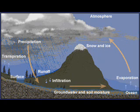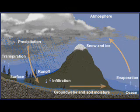Most people are familiar with the concept of cycles — that certain substances move endlessly throughout the Earth's biosphere, hydrosphere, atmosphere, and lithosphere, existing in different forms and being used by different organisms at different times. But always moving, always circulating, like the water cycle.